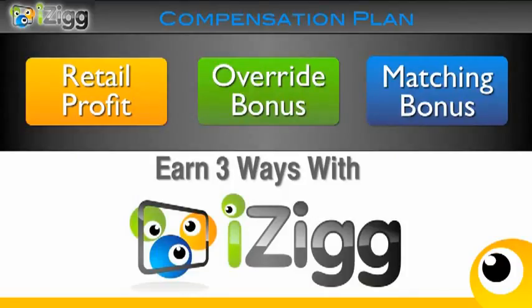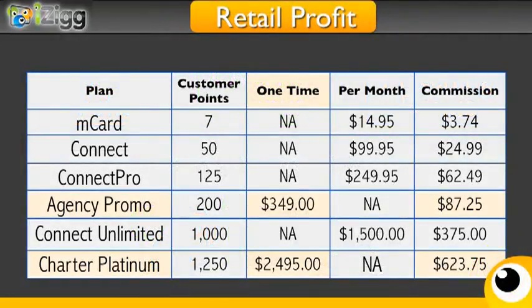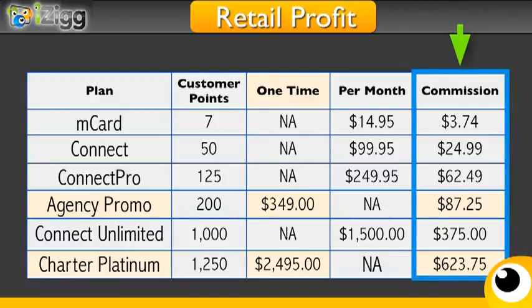There are three ways to earn with iZIG in our compensation plan: retail profit, an override bonus as you grow a sales organization, and the matching bonus. The retail profit is earned as a 25% commission as displayed in the last column on your screen, and this is paid every month that the service package is renewed. The agency promo pack and the charter platinum package are only renewed annually as an option for our mobile media agents. The MCard, Connect, Connect Pro, and Connect Unlimited customer points are renewed every month, accumulated in sales volume, and your commission earned is 25% as a personal sale each and every month.